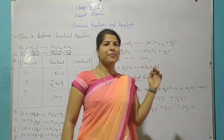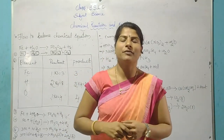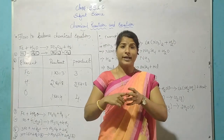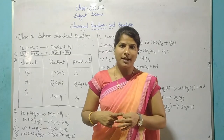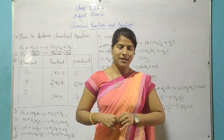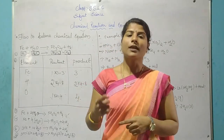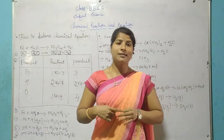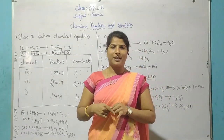Now we are discussing the types of chemical reactions. There are four types: the first is combination reaction, the second is decomposition reaction, the third is displacement reaction, and the fourth is double displacement reaction.